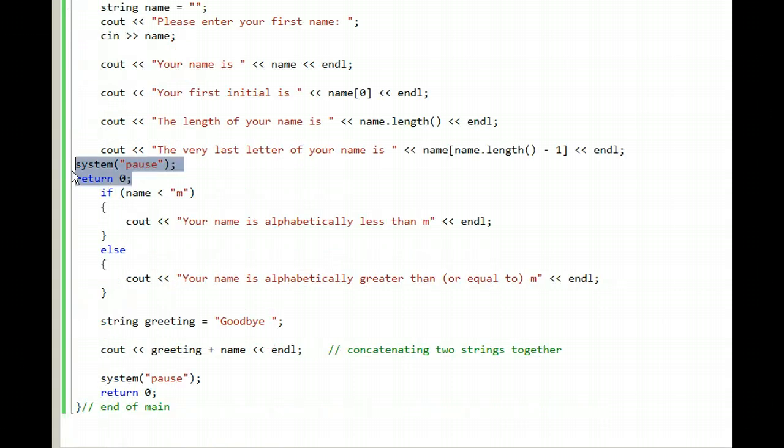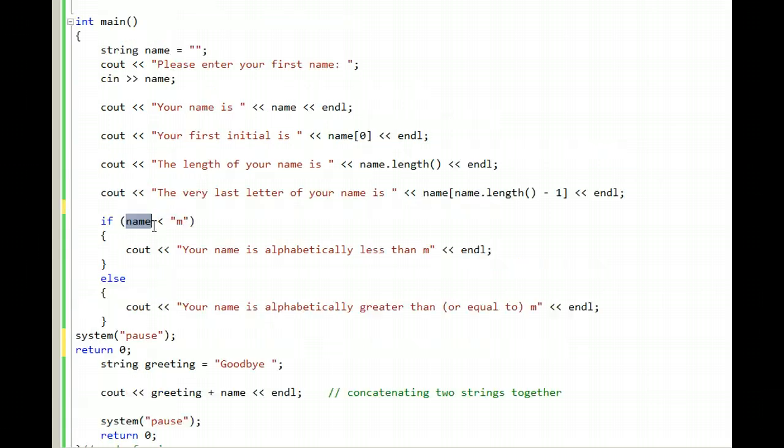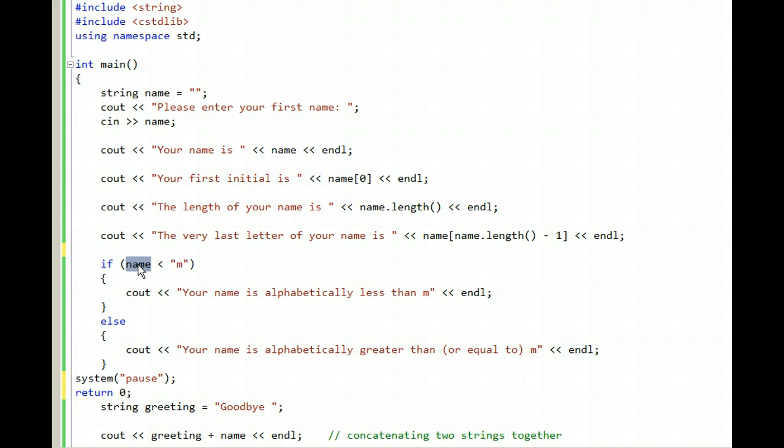Last of all, something that you can do with strings that you should know for the final exam is that they can be alphabetized. By using the less than symbol, alphabetically, the name such as John will be less than M. And therefore this program will print out that John is less than M. If we run the program with the name Zorro, the Z is not greater than M, so it will end up printing that your name is alphabetically greater than M.